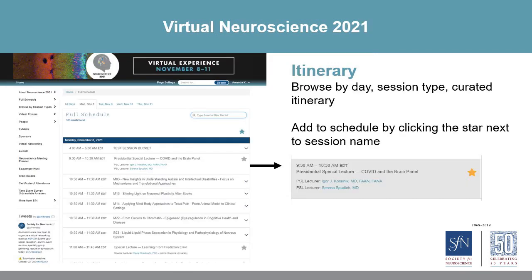There are many ways to search content on the site. Displayed here is a glimpse of the full schedule listing. Heading to your schedule is as easy as clicking the star. There will also be listings of curated itineraries, lists by sessions, and the ability to search by sub-theme.